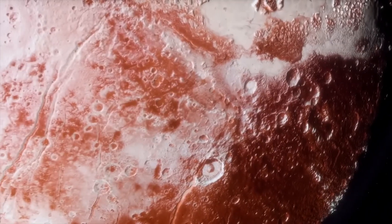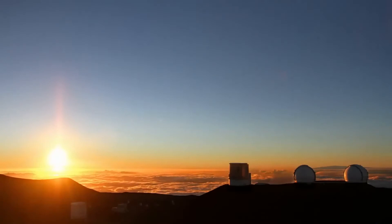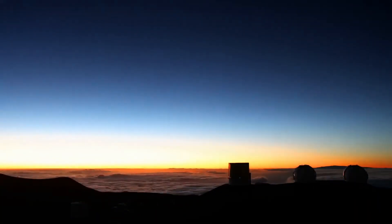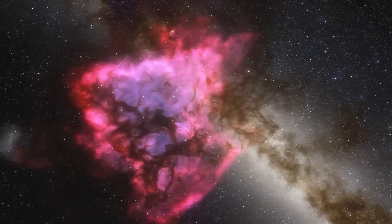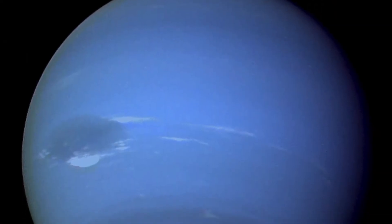No solid surface: Neptune is a gas giant, primarily composed of hydrogen and helium, with no solid surface like Earth. As you descend into its atmosphere, the pressure and density of the gases increase rapidly. There is no solid ground to stand on, and attempting to land on Neptune would be like trying to land on a thick, dense cloud.